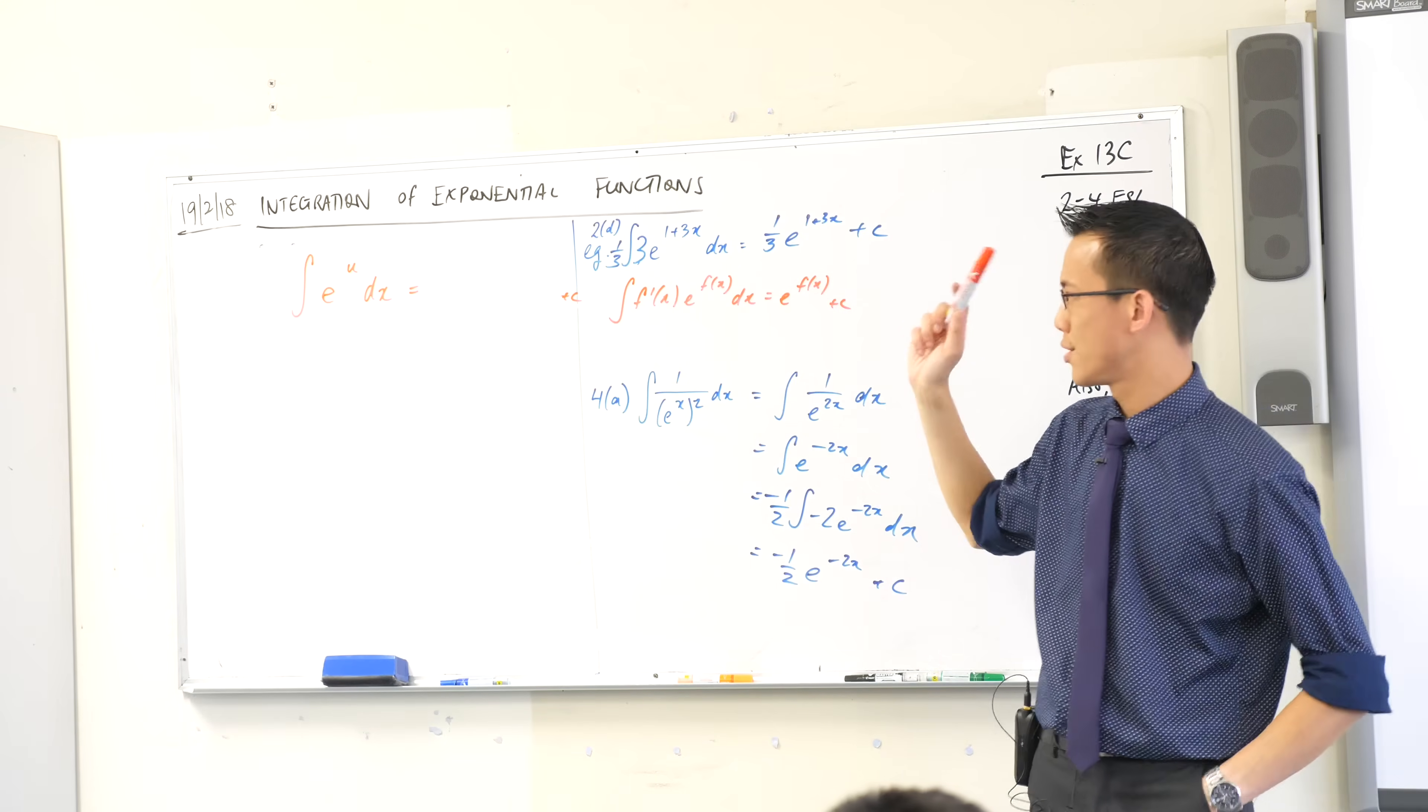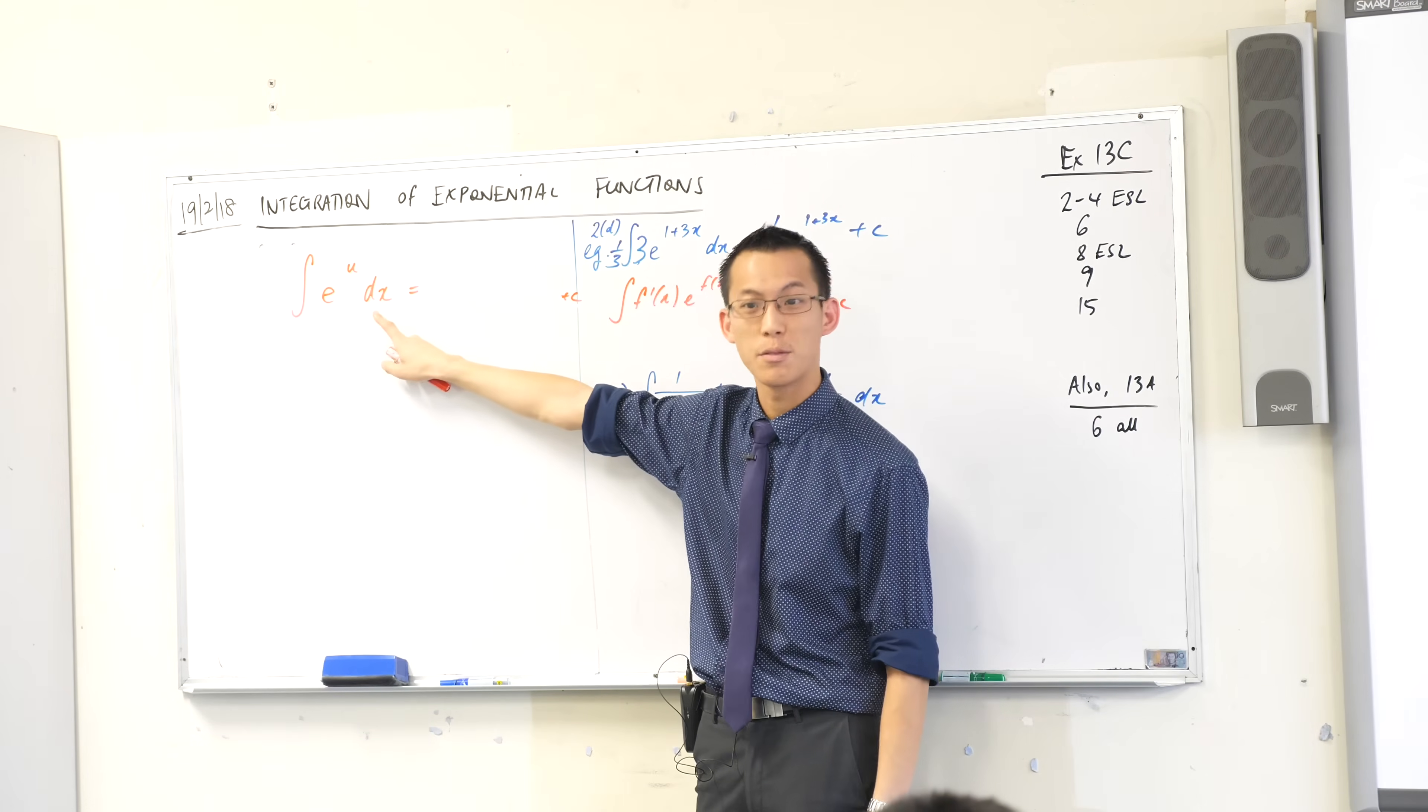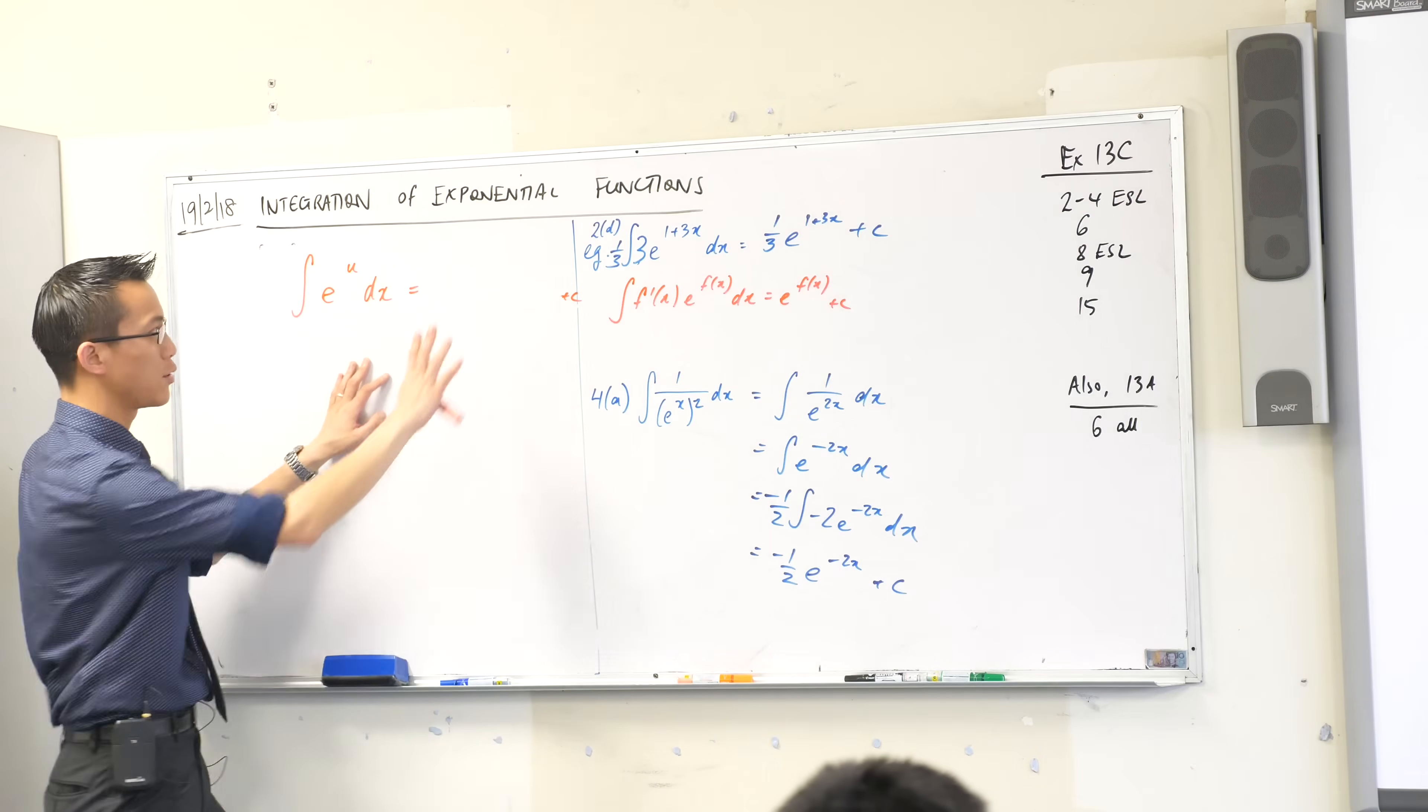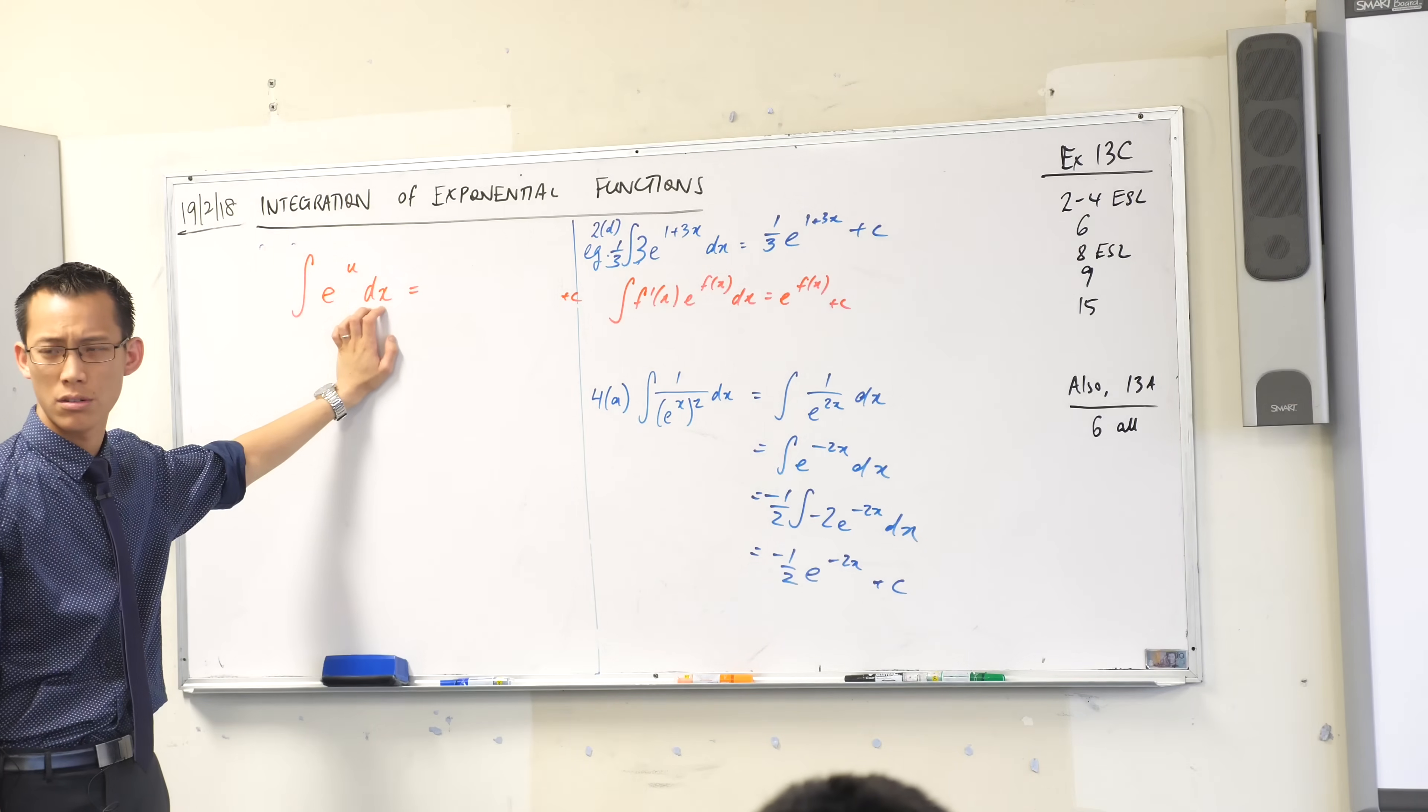Now, this looks a little bit weird because you've got a function in u, you're trying to integrate with respect to x. So what do you do? When you do substitution normally, what do you have to do as an extra process over here to change this into the right thing? What do you do?